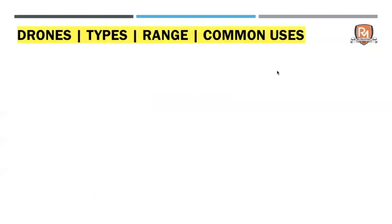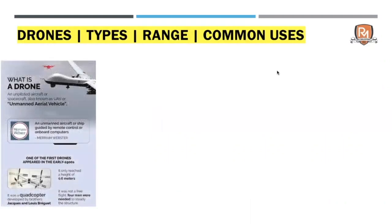To begin, let us understand what exactly are drones and what are the different types that exist in the market. A drone is essentially an unmanned aerial vehicle — an aircraft which is unpiloted and can be controlled by anybody having a remote, sitting in one place and controlling the aircraft within a specific range. The concept of drones is not very new; the earliest drones appeared in the 1900s and they have evolved over time, getting better and better with advancements in technology.